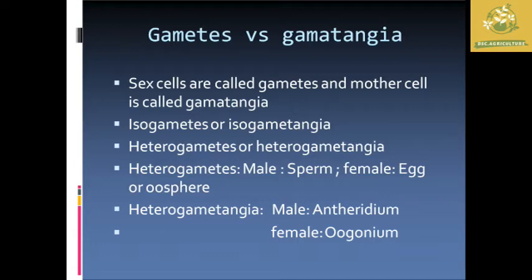Gametes are the cells involved in reproduction, and their mother cell is known as the gametangium. They can be classified as isogametes or isogametangia, and heterogametes or heterogametangia. In heterogametes, the male one is known as the sperm and the female one is known as the egg or oosphere. In heterogametangia, the male structure is called the antheridium and the female one is known as the oogonium.